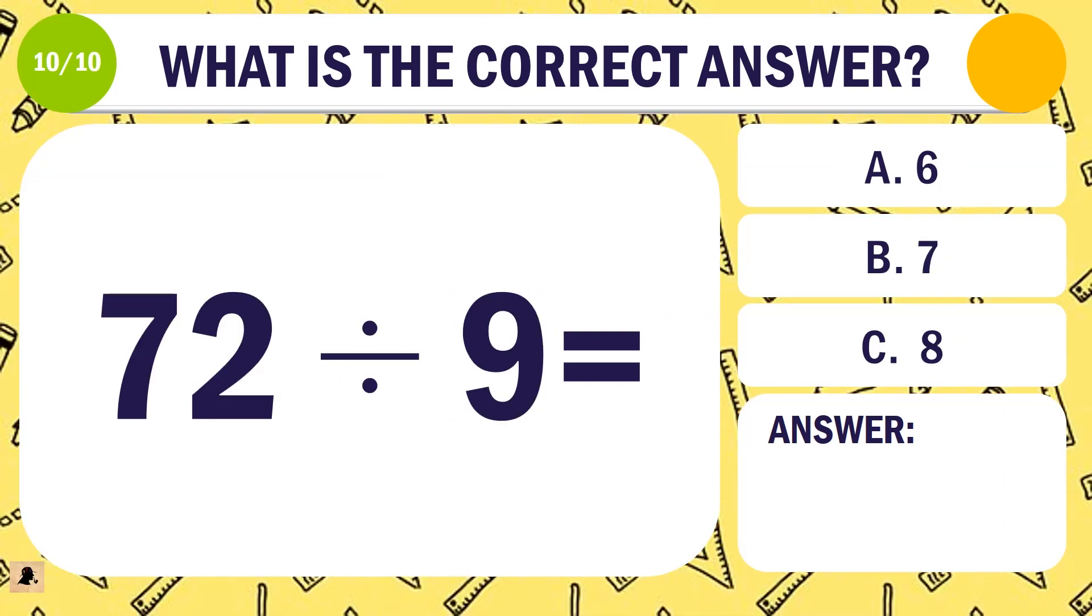Question 10. What is the correct answer for 72 divided by 9? A. 6. B. 7. Or C. 8.